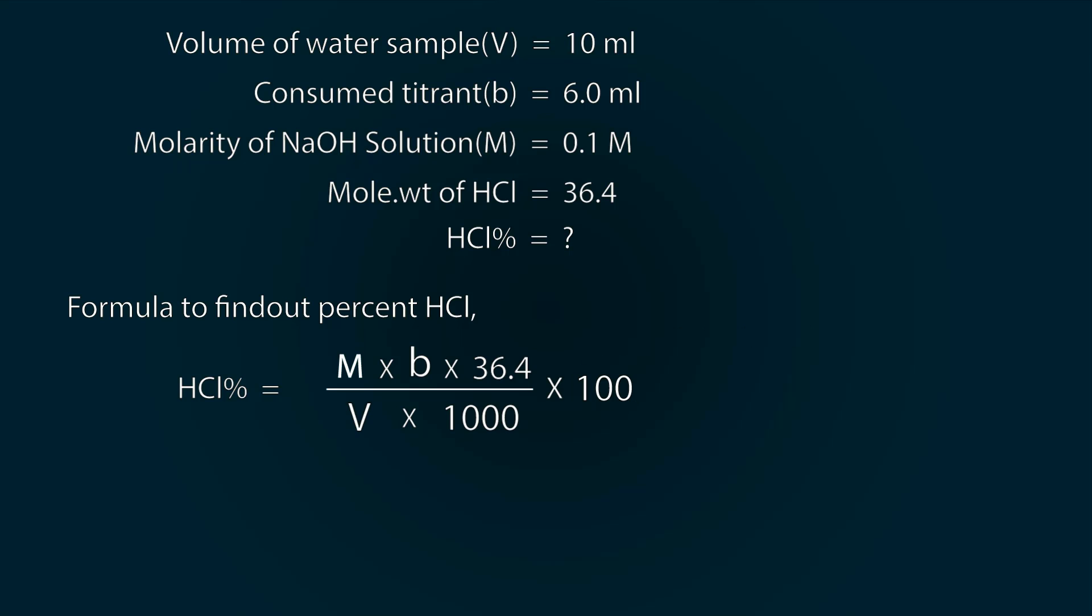Now let's put the values. So we get 0.1 multiply by 6 multiply by 36.4 divided by 10 into 1000, whole multiply by 100. So we get our percentage value of HCl involved is 0.22%.